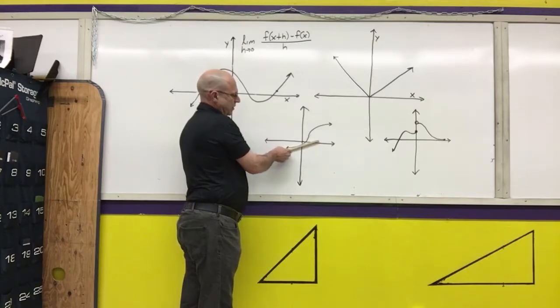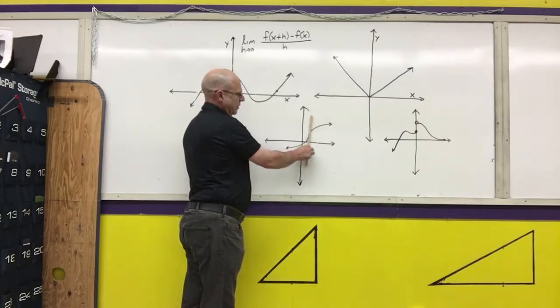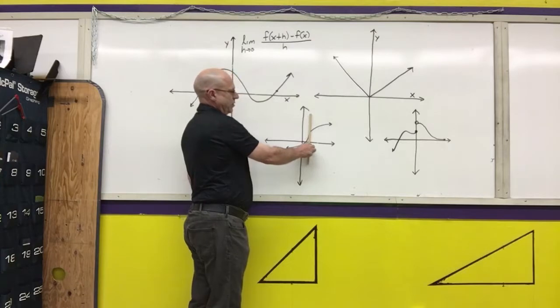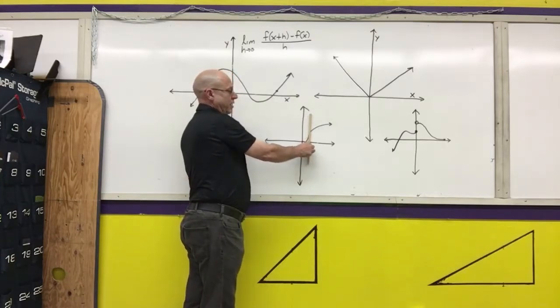this tangent line is positive, positive, positive. And then right here, the tangent line would be going straight up. We know that the slope of a vertical line does not exist.